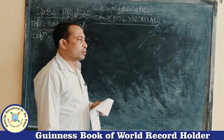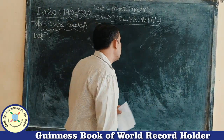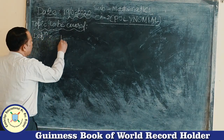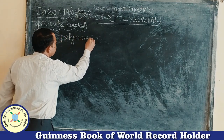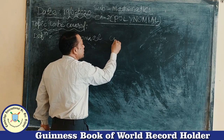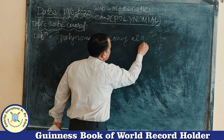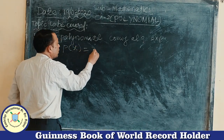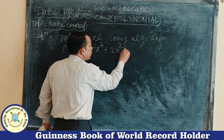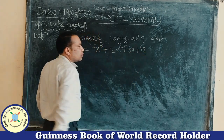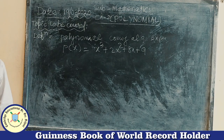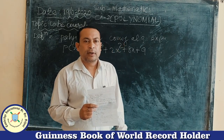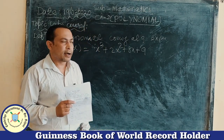Good morning. Today we are going to start Chapter 2, that is Polynomials. First, define polynomial. A polynomial comes from an algebraic expression — for example, P(x) = x³ + 2x² + 8x + 9. The real definition of a polynomial is: any algebraic expression where the power of the variable is neither a fraction nor negative. That is called a polynomial.